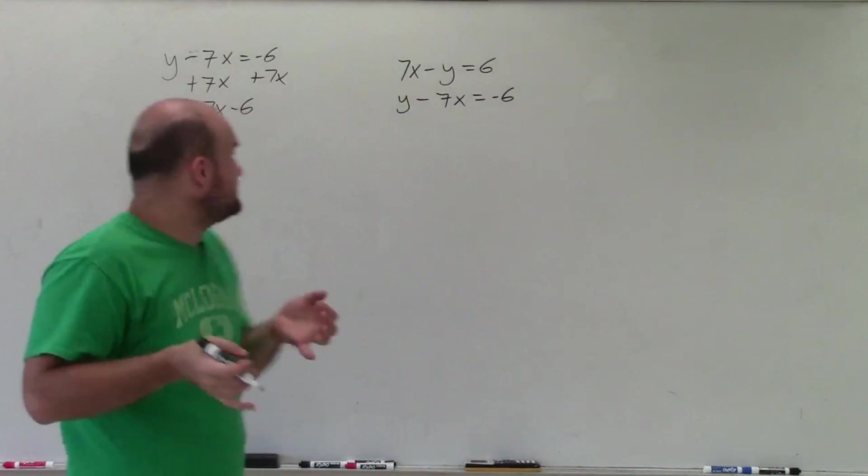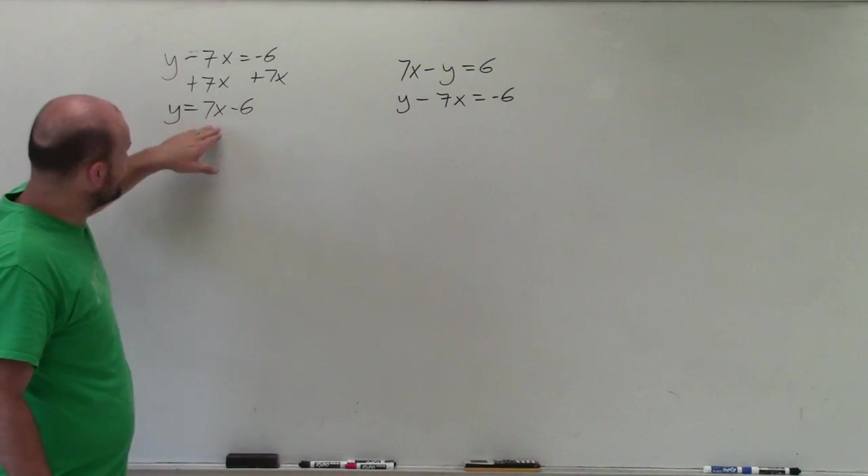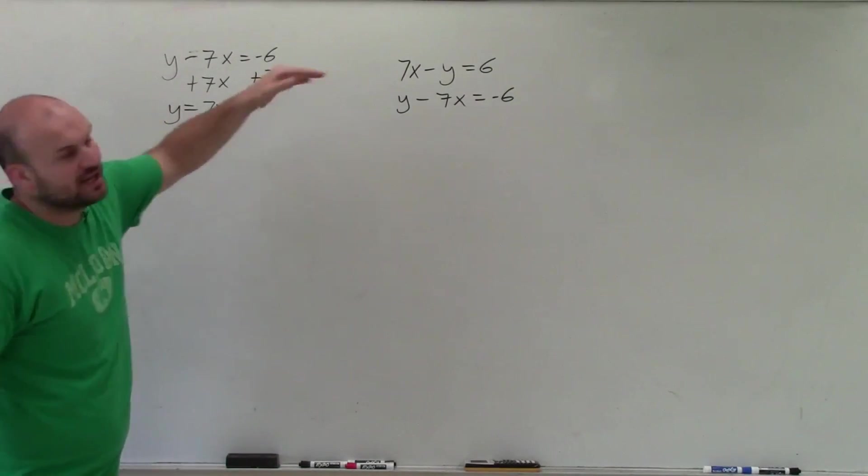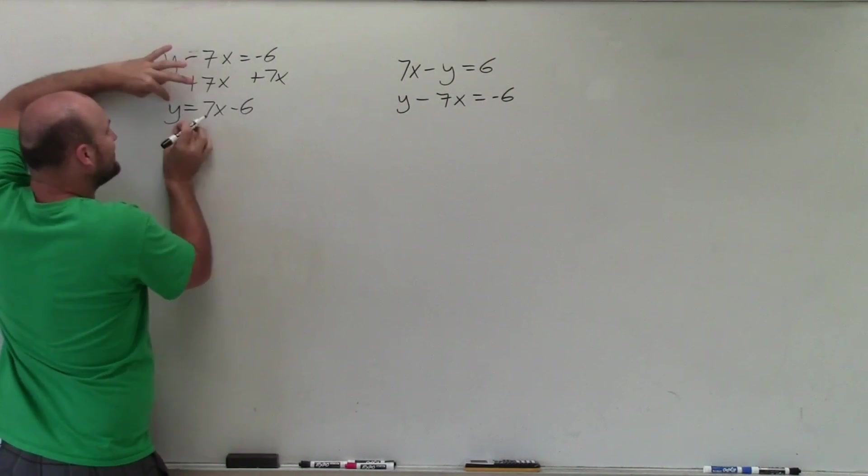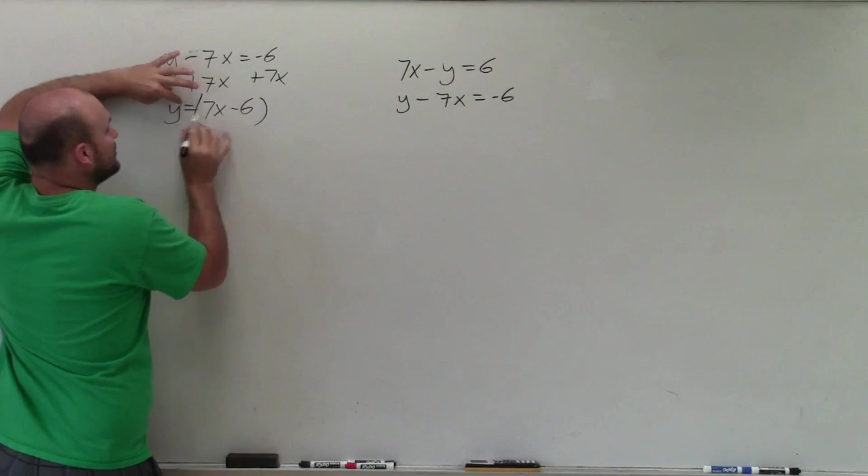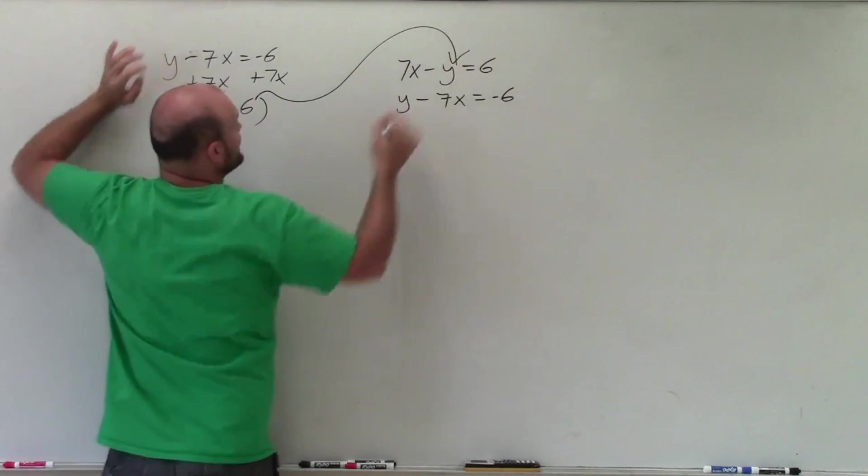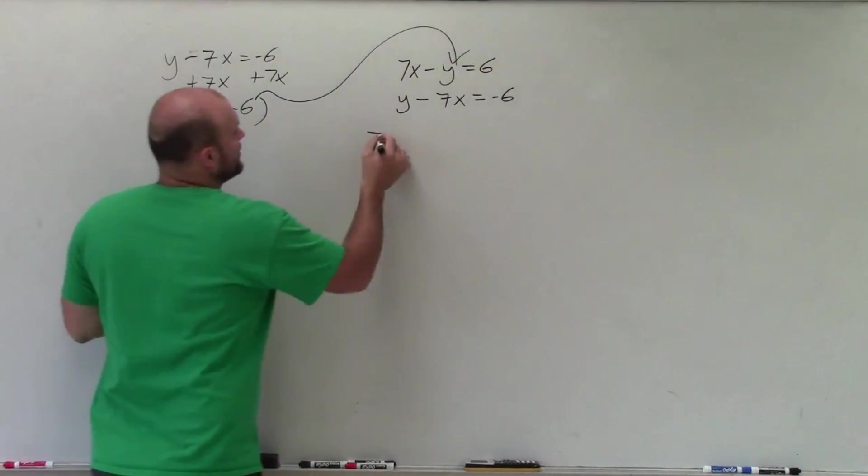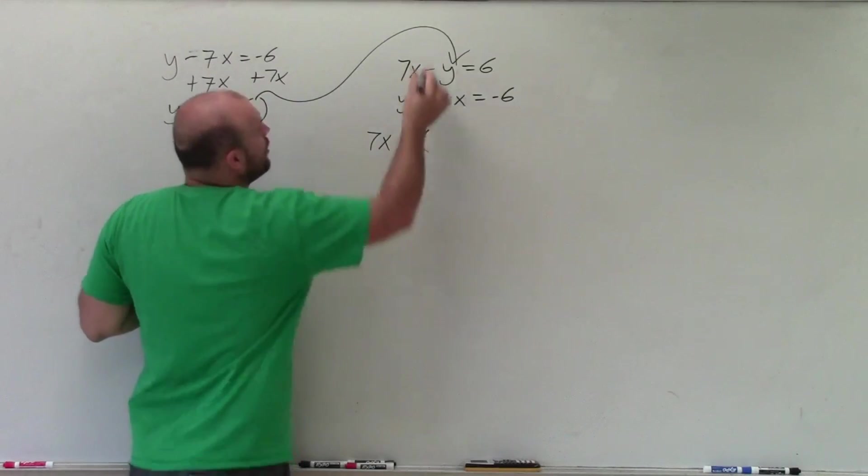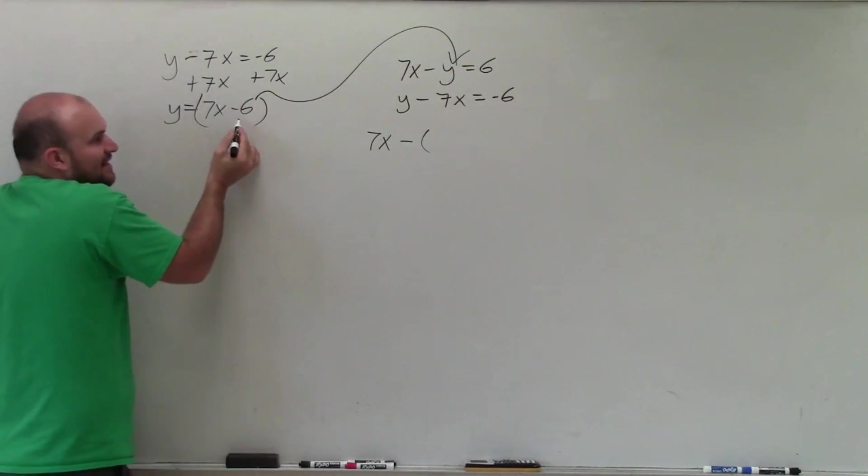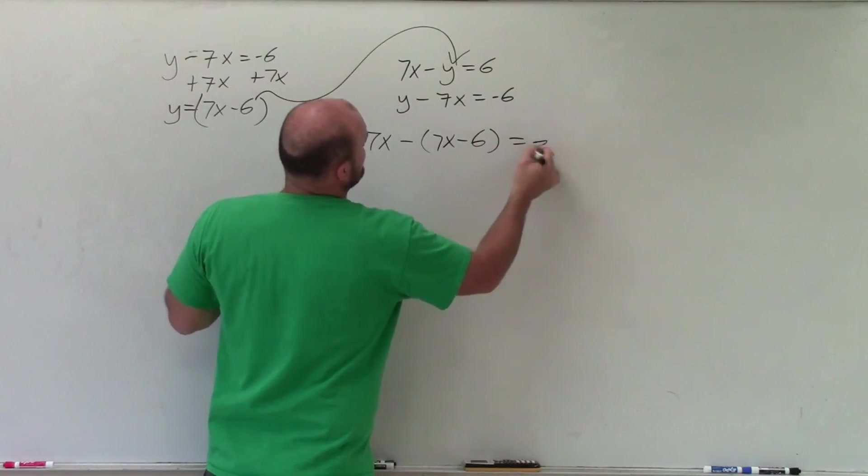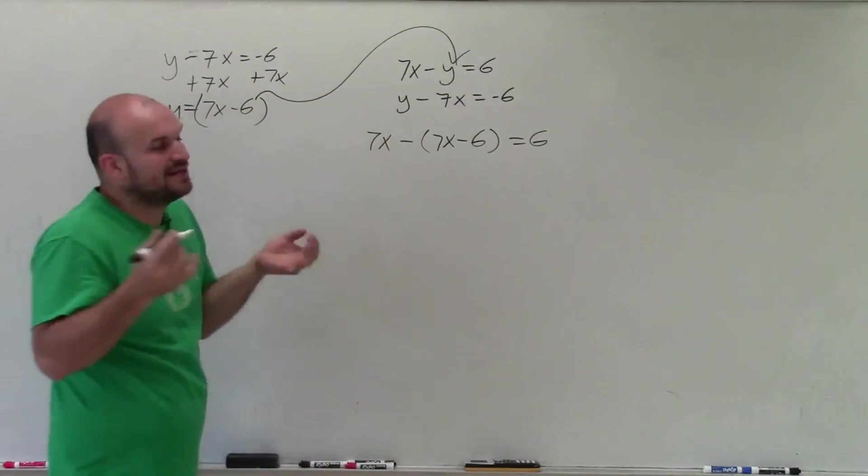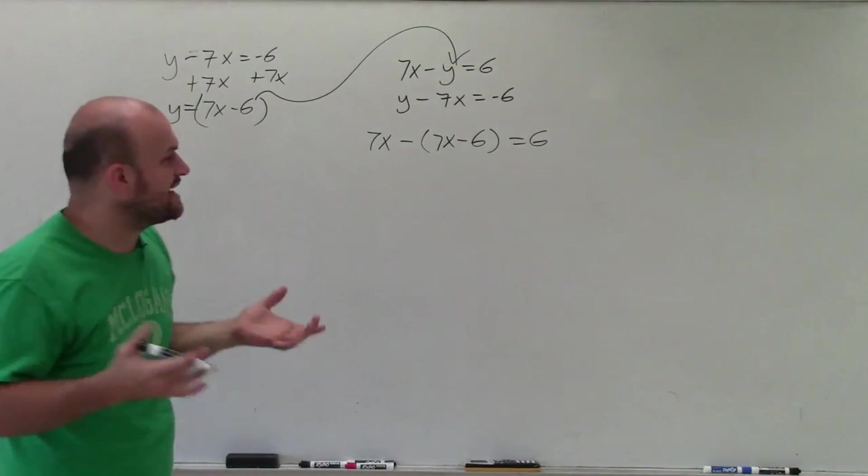So now I'm going to take the value of 7 and plug it in for y in the other equation. So therefore I have 7x minus, rather than y, y is equal to 7x minus 6. So these are interchangeable, right? So that's 7x minus 6 equals 6. You could also write y, but again, we want to write an equation which only has x's so we can solve.